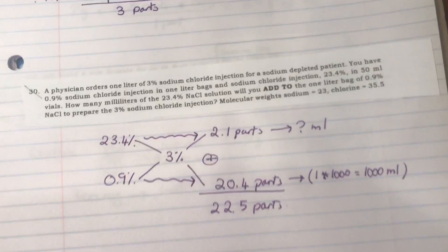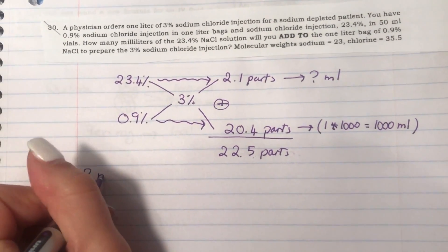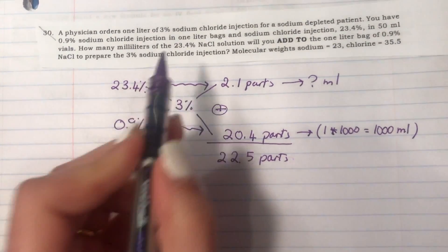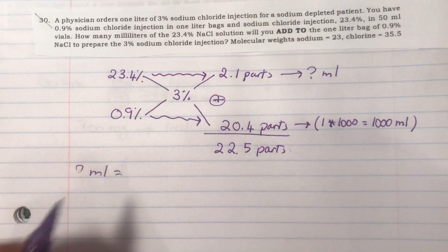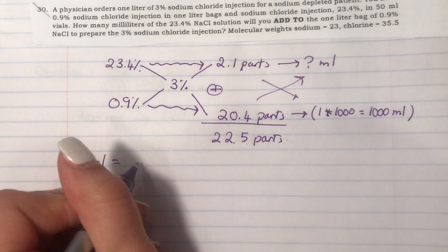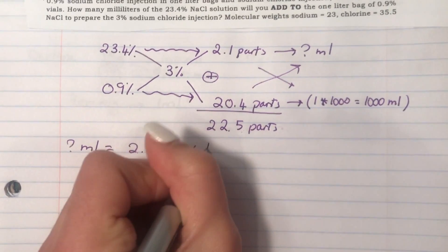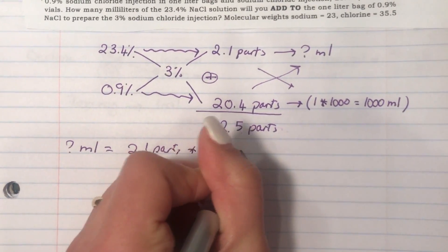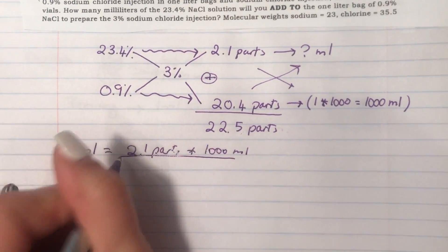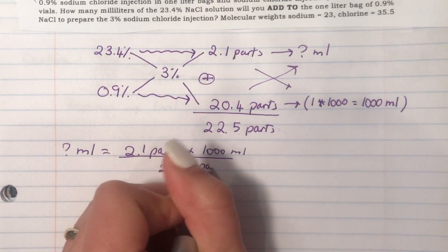To calculate the amount of mL needed for the 23.4% sodium chloride, we will be doing the crisscross here. So 2.1 parts times 1000 mL over 20.4 parts.